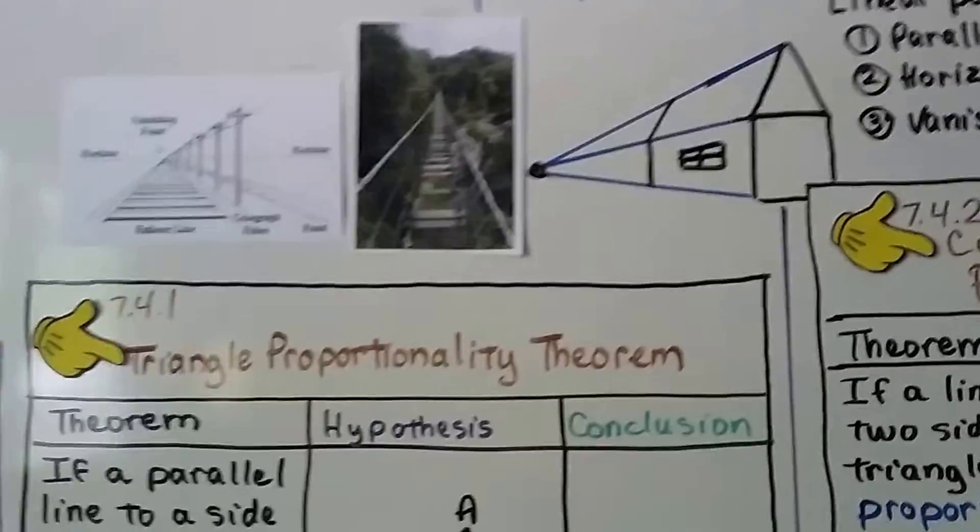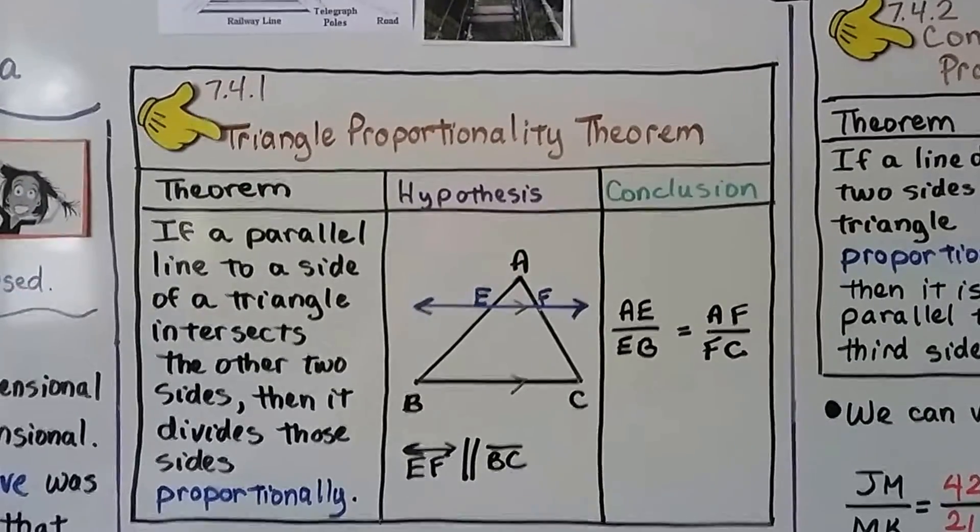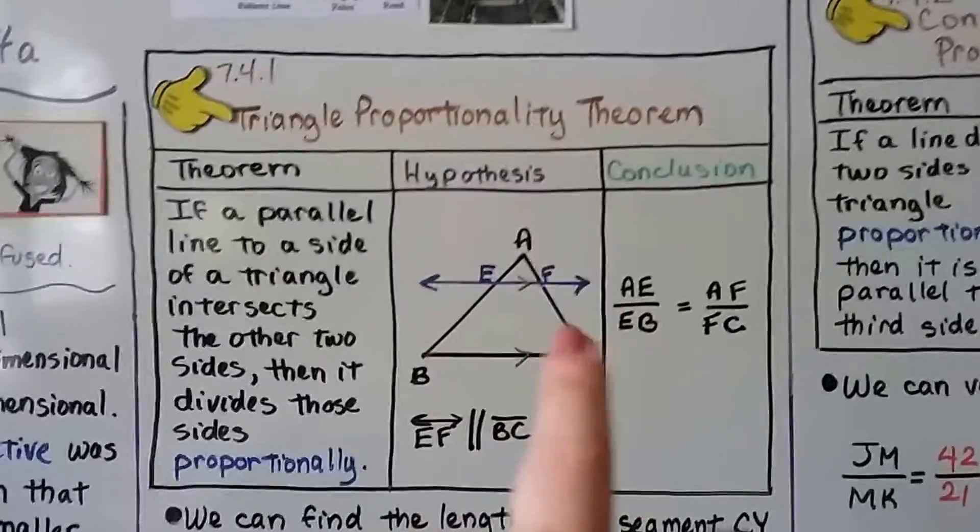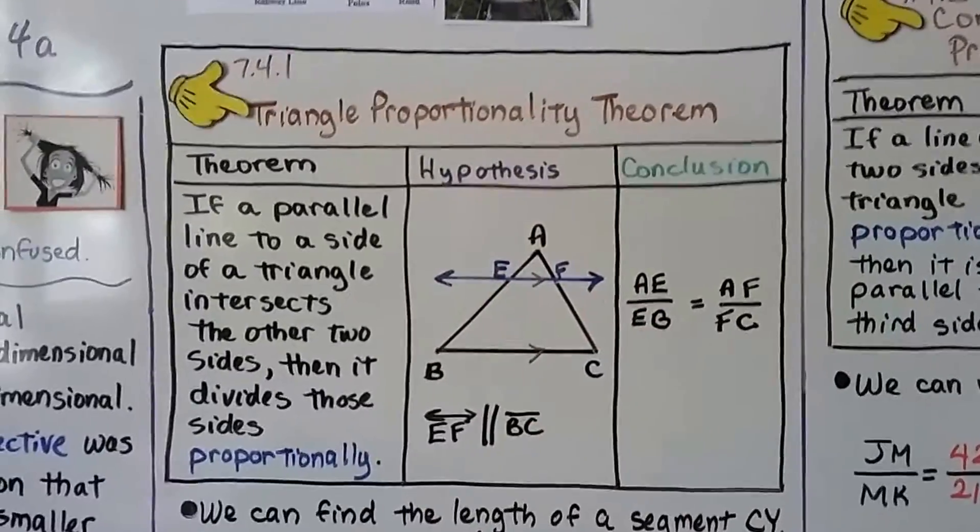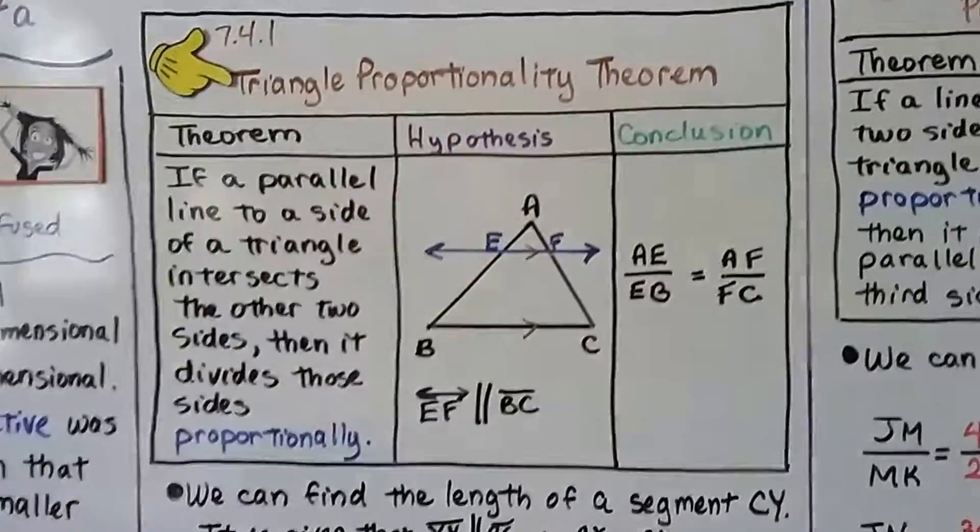The triangle proportionality theorem says if a parallel line to a side of a triangle, like EF, intersects two other sides, then it divides those sides proportionally. So now it's dividing these proportionally.